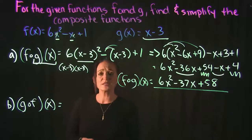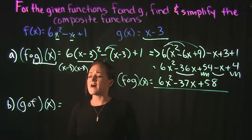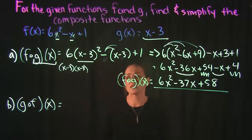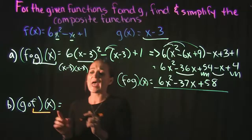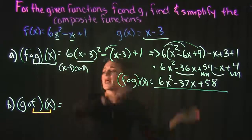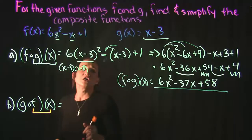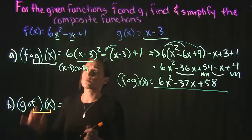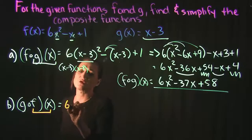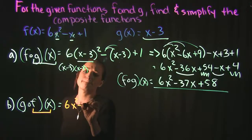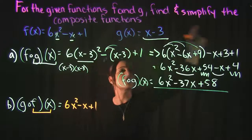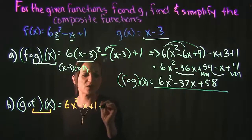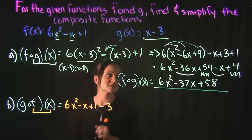So let's do a very similar process but now we're going to find g of f of x which means we're going to take f of x and plug it into g of x. So g of x is x minus 3. So instead of that x we're plugging in f of x which is 6x squared minus x plus 1. And then continuing on with g of x the only thing left there is a minus 3.